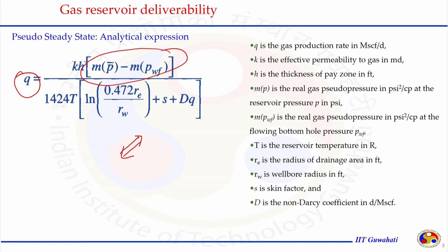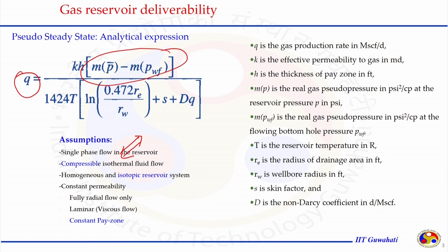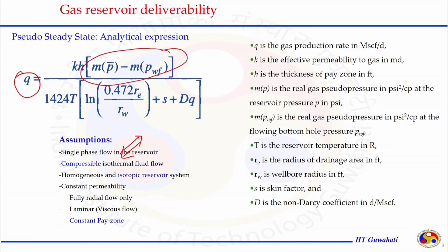In the last class we understood the different forms the mathematical expression can be written: the P approach, P-square approach, and MP approach. This approach has been adopted to linearize the non-linear equation that arises because of the material balance. We discussed all these things, and the expressions for steady state and pseudo-steady state using all three approximations are based on certain assumptions: the flow is single-phase gas flow in the reservoir.